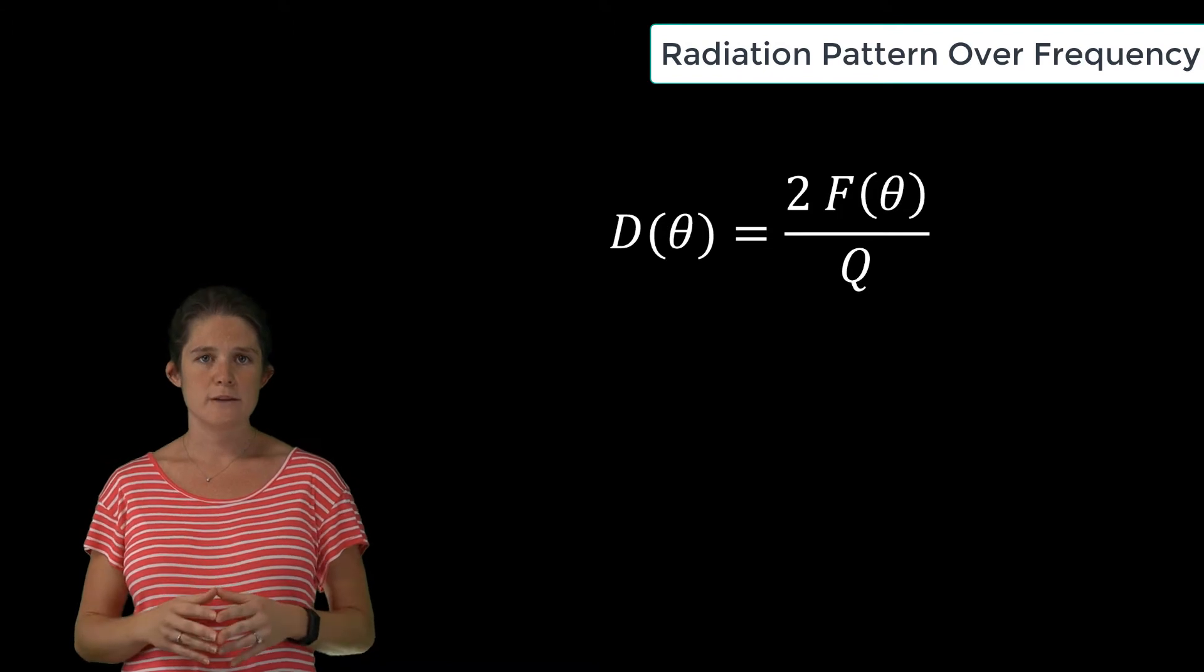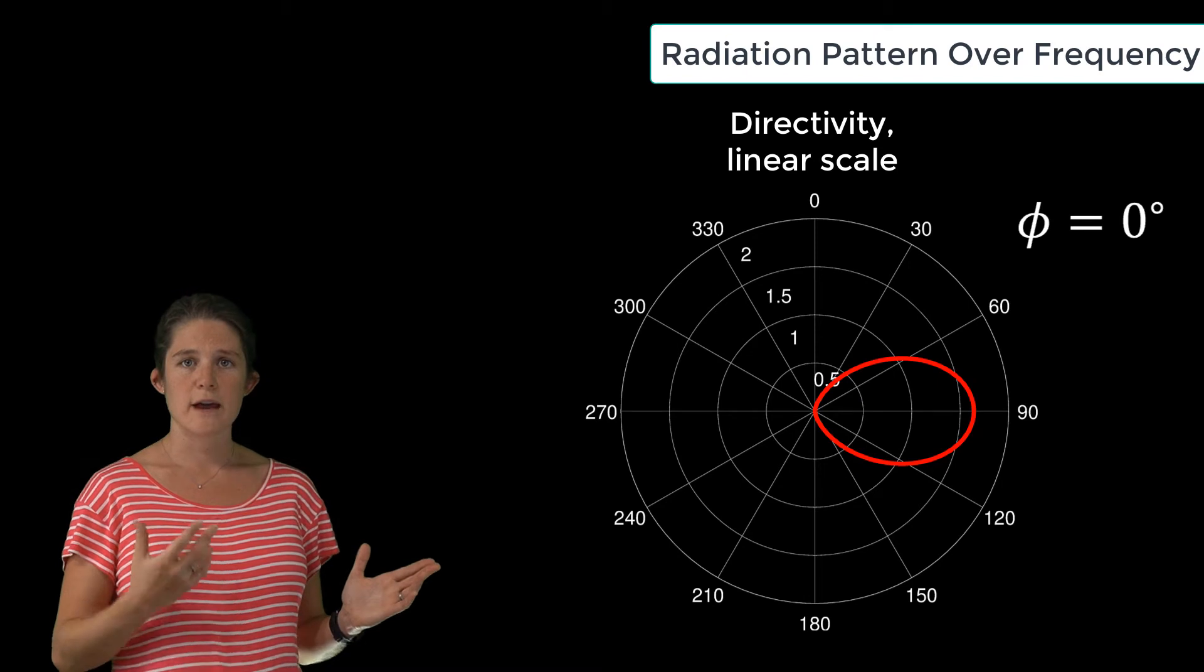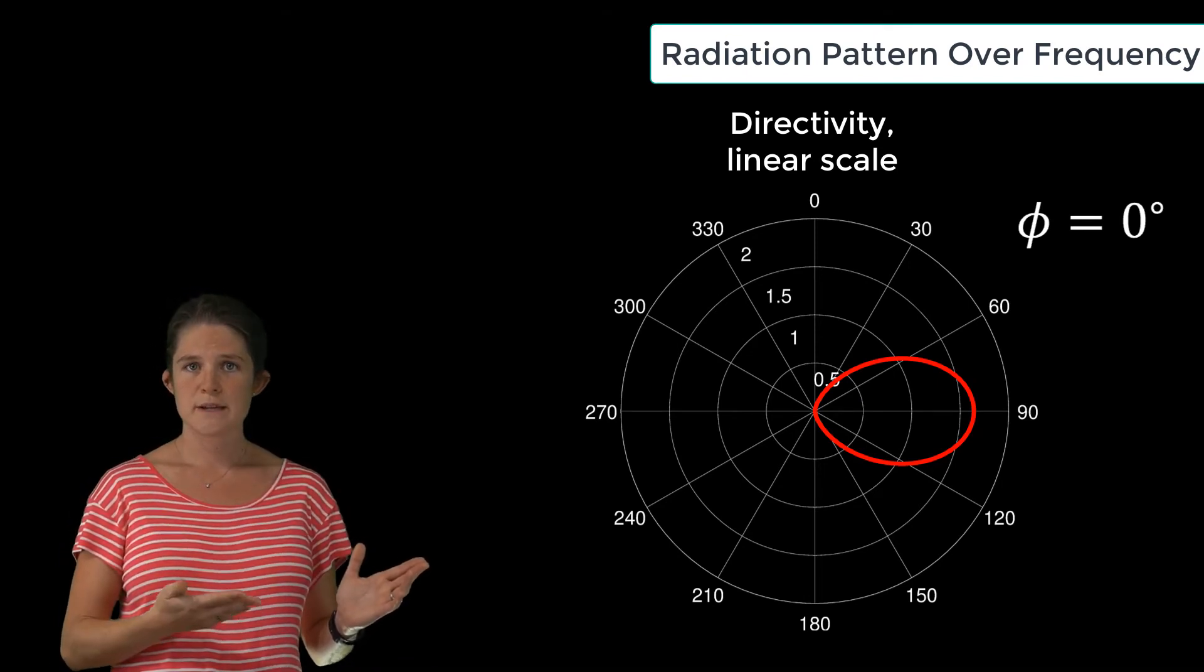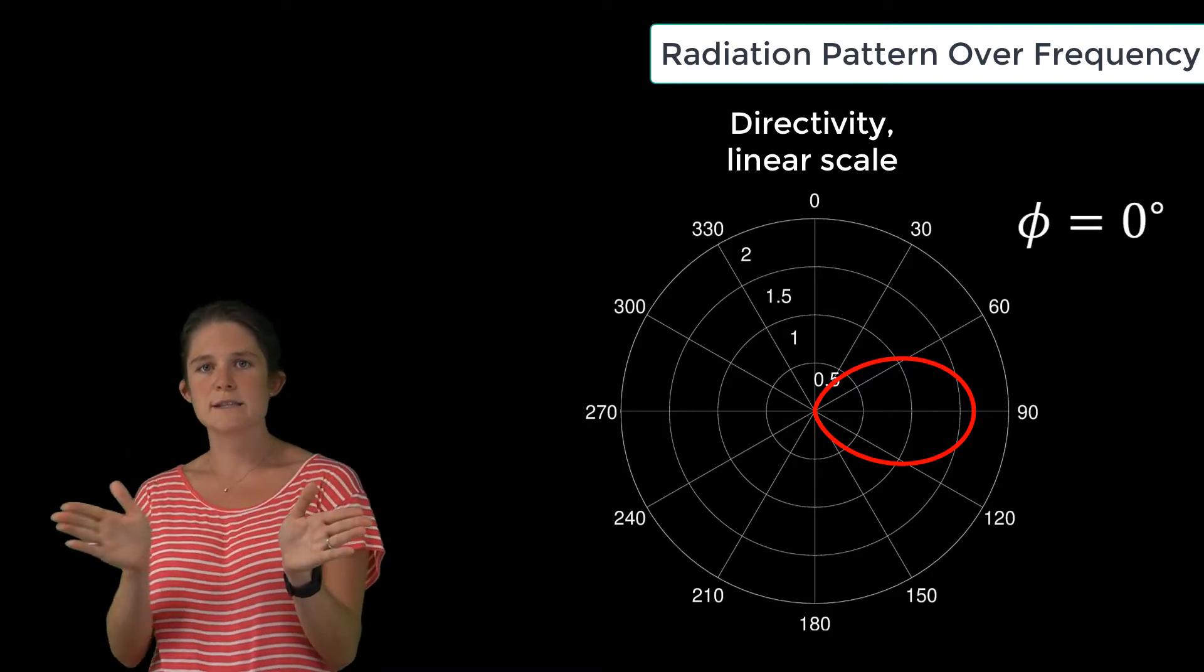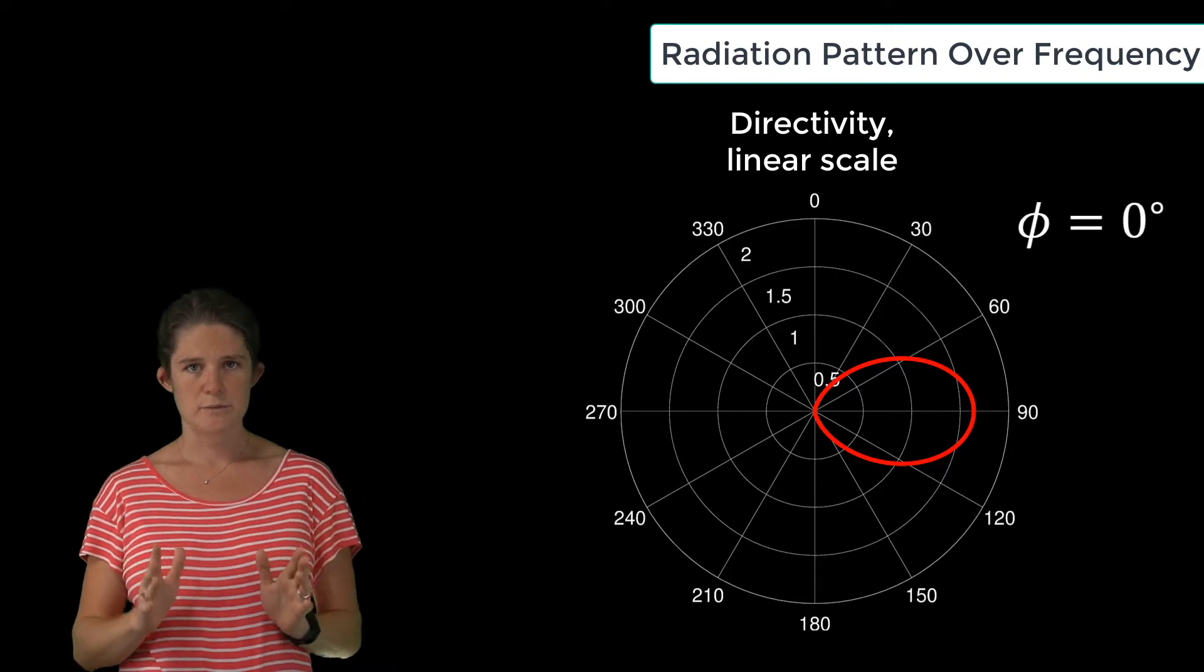For instance, this is a plot of the radiation pattern of the half-wave dipole on the plane Phi equals zero. Since you know that this will look exactly the same no matter what value of Phi you choose, this tells you the entire radiation pattern.